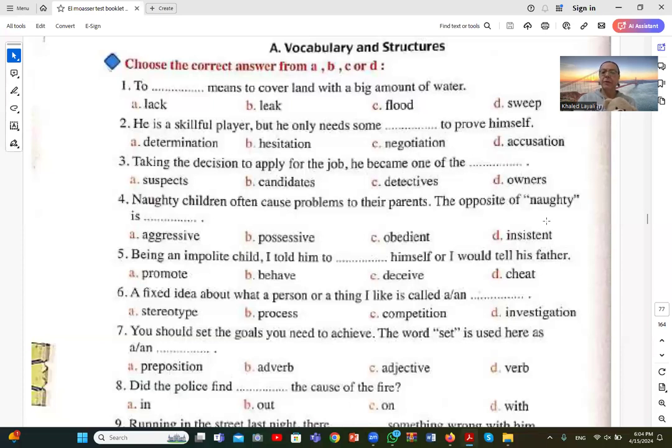Number one: to blank means to cover land with a big amount of water. What does it mean to flood the earth with a big amount of water? It's called to flood. Flood is a big amount of water. Here to flood is used as a verb.